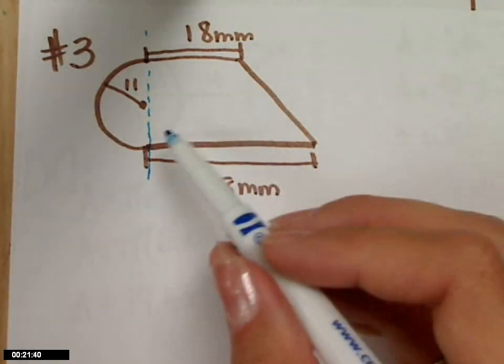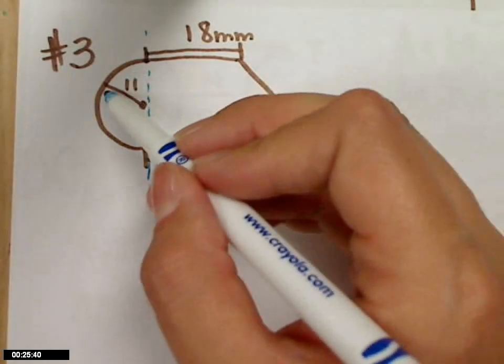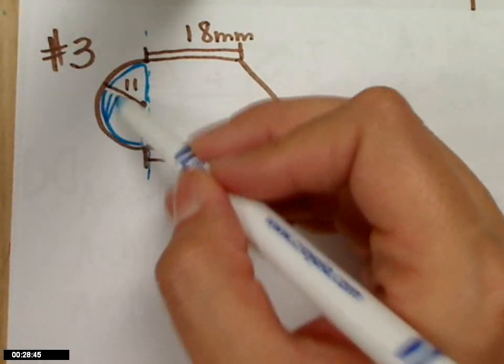And what do we want to find first, the trapezoid or the semicircle? Okay, let's do a circle. So this piece right here is what we're looking for.